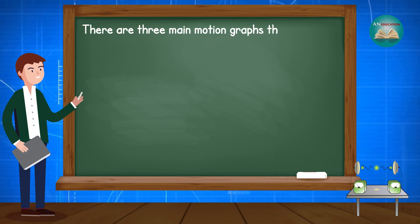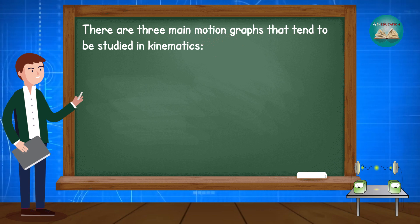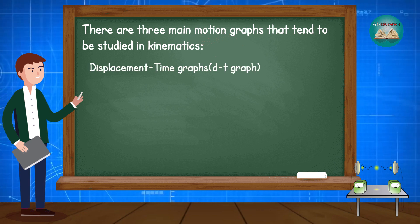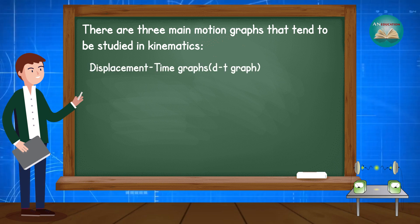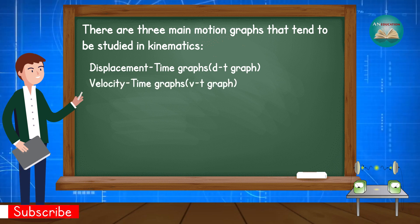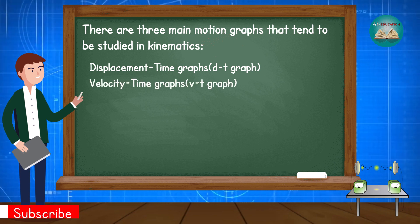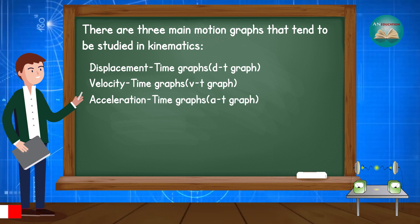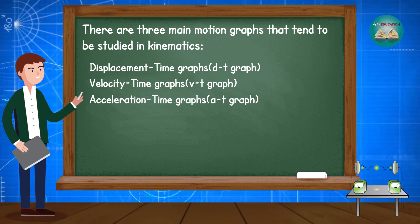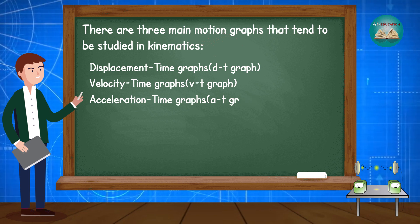There are three main motion graphs that tend to be studied in kinematics. First is the displacement-time graph, represented by the DT graph. Second is the velocity-time graph, represented by the VT graph. Third is the acceleration-time graph, represented by the AT graph.